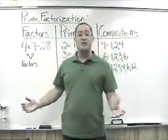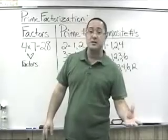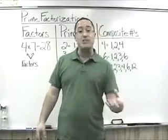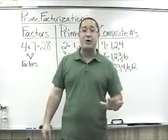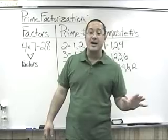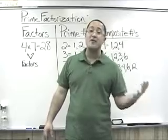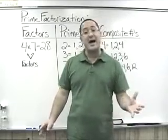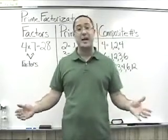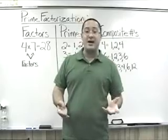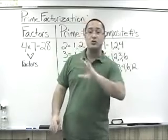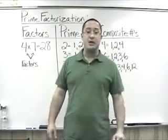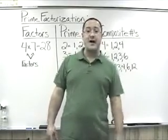Another way to view factors is to think of division. Any number you could divide a number by without getting a remainder is a factor. For example, 5 is a factor of 10 because 10 divided by 5 is 2 with no remainder.